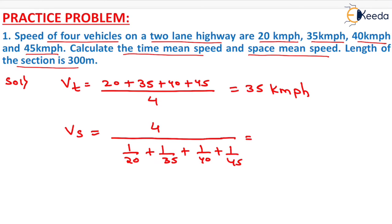We have to divide the numerator by the denominator, and it will be equal to 31.798 km per hour. That will be the space mean speed.